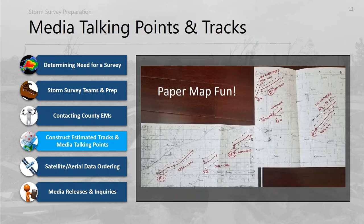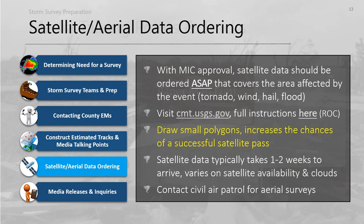I always have a soft spot for paper maps and will usually print out a track map or draw my own. Once you get approval, satellite imagery should be ordered as soon as possible — ideally the night after the event — from the USGS server. Instructions are on the central region or ROC page.